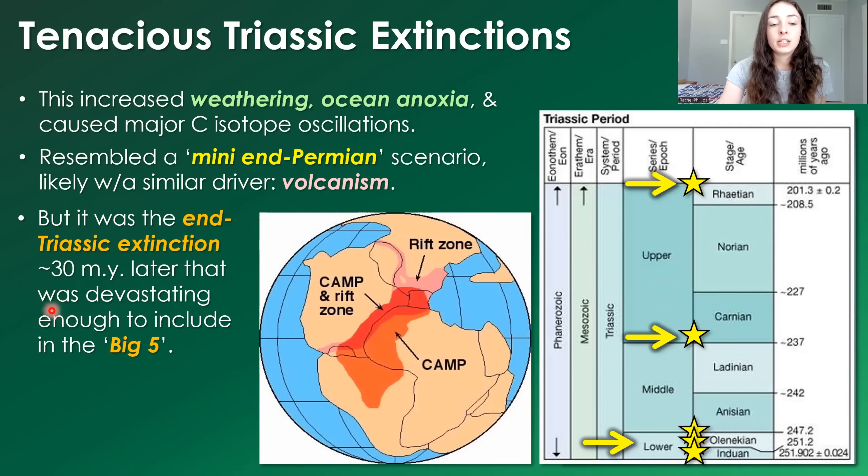The end Triassic extinction event around 200 million years ago was devastating enough to be included in the Big Five. It was triggered by CAMP volcanism — volcanism in the Central Atlantic Magmatic Province — where rifting allowed magma to come up and cause major volcanism. I talk about this more in my late Triassic mass extinction video, linked below.